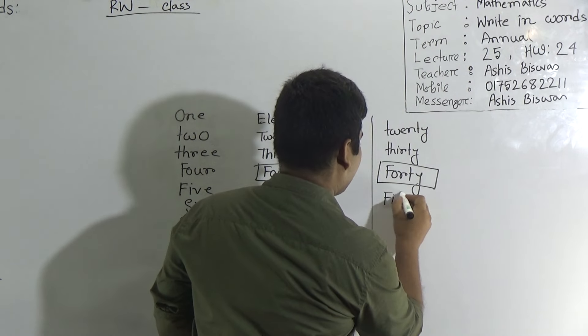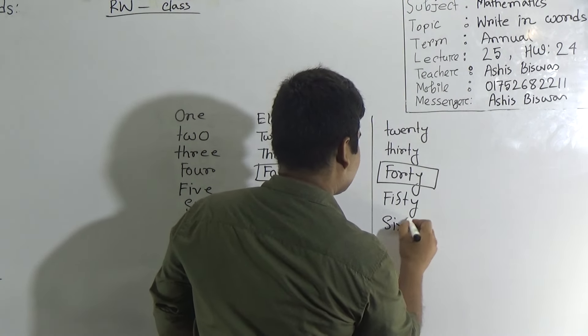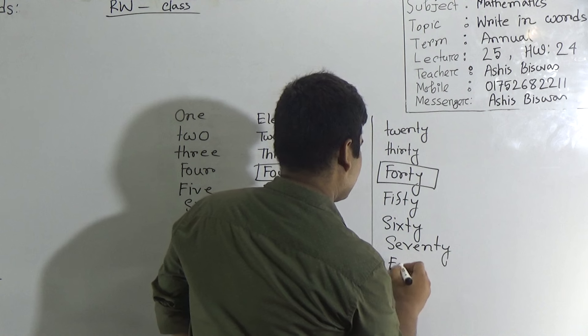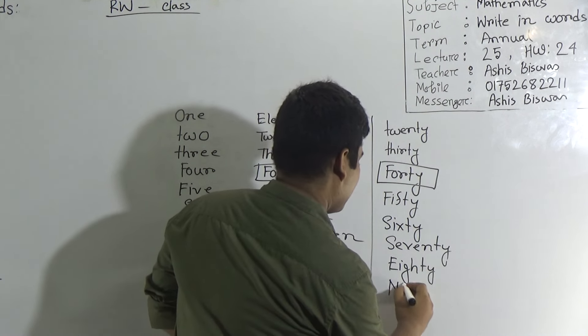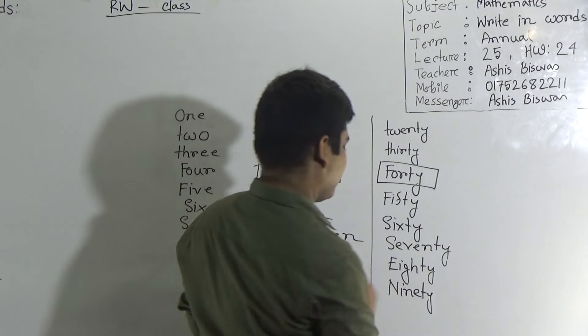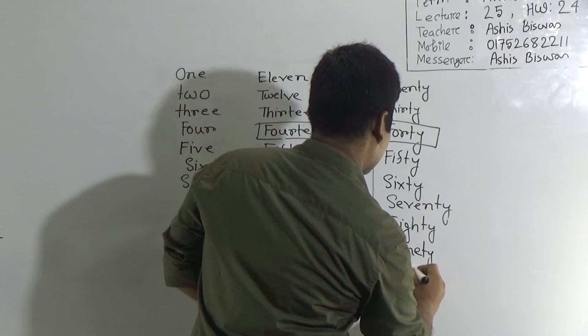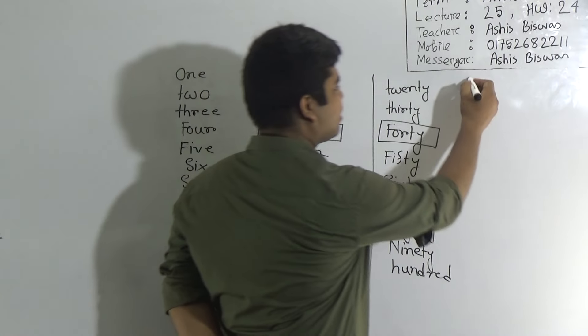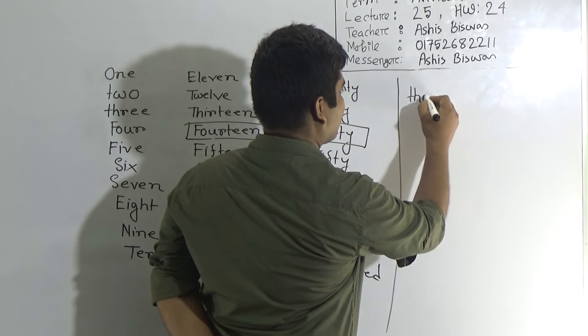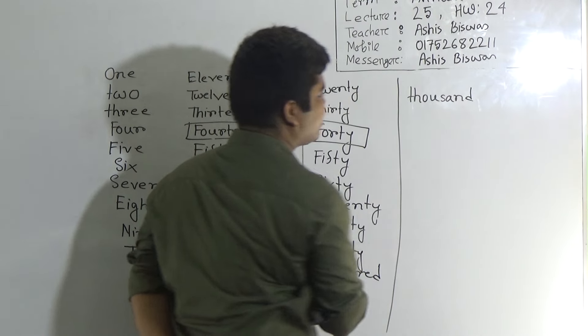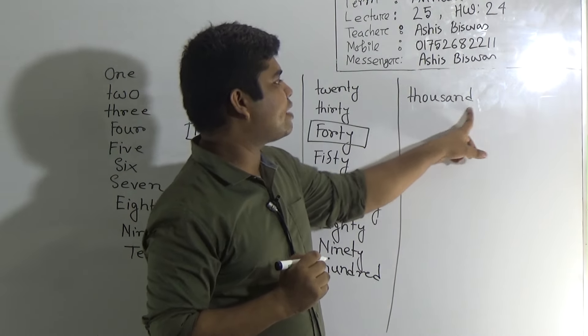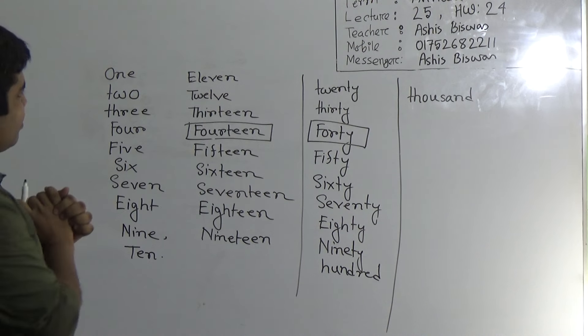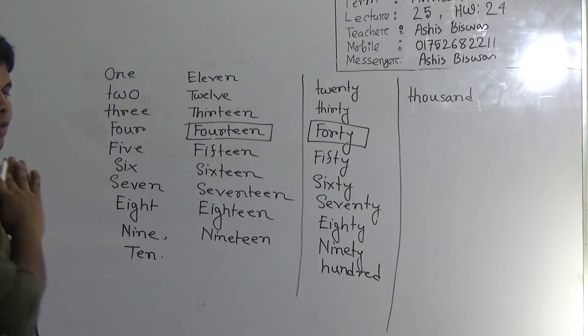Then 50 F-I-F-T-Y, then 60 S-I-X-T-Y, then 70 S-E-V-E-N-T-Y, then 80 E-I-G-H-T-Y, then 90 N-I-N-E-T-Y, then 100 H-U-N-D-R-E-D. And finally we shall learn the spelling of 1000 T-H-O-U-S-A-N-D. My students if we learn the spelling of these numbers then we can easily write in words of any number.